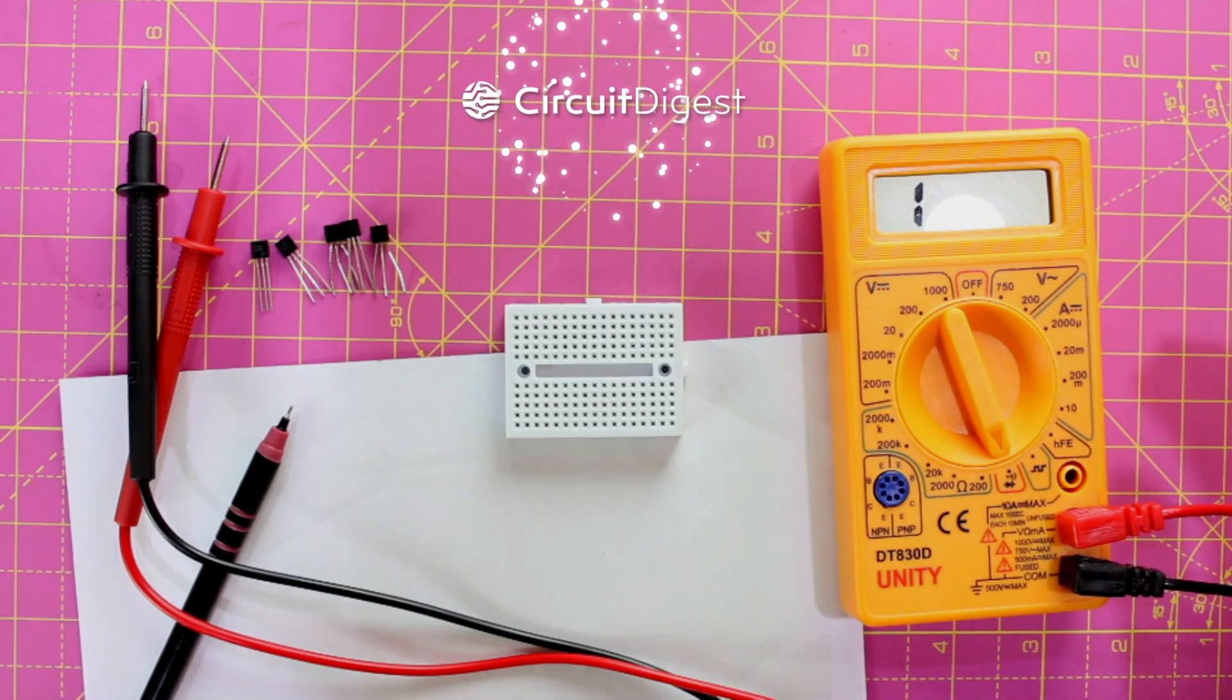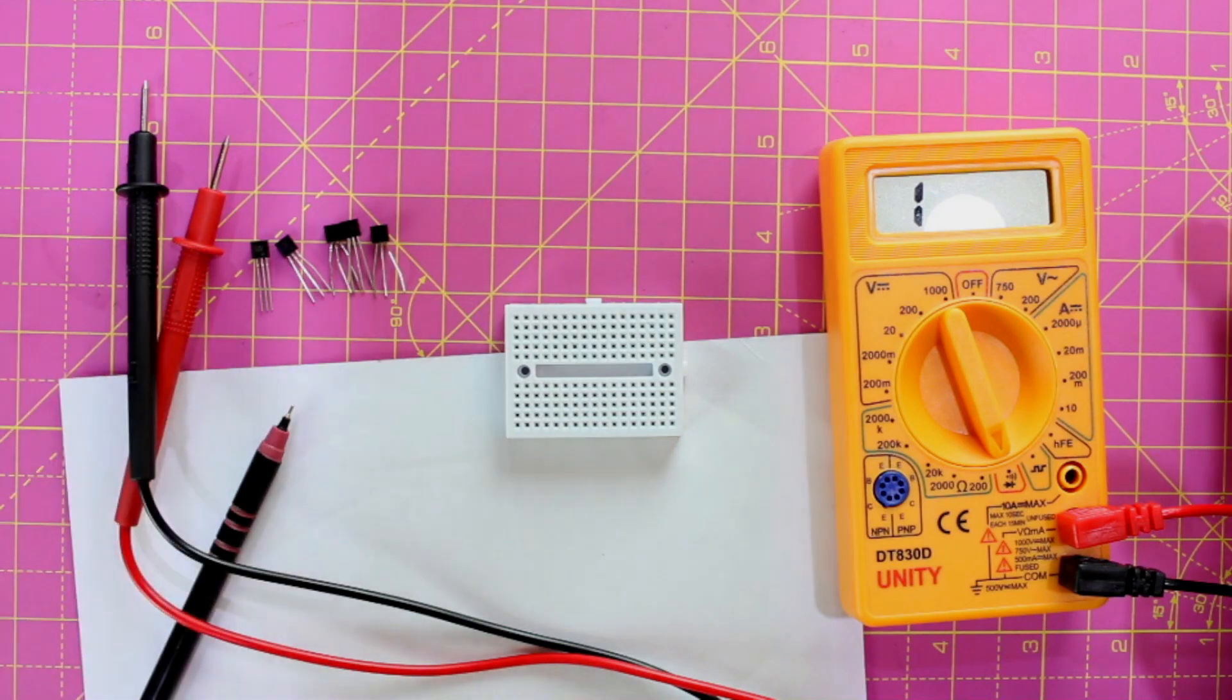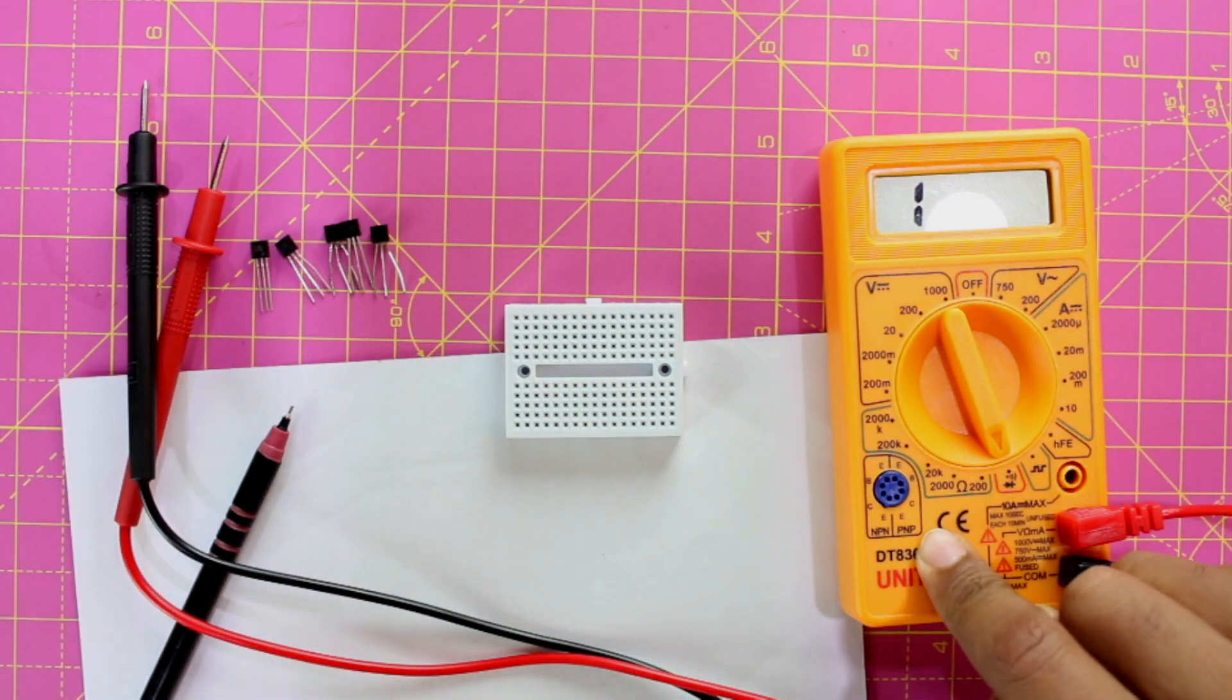Hi, this is Ashwant from Circuit Digest and in this video I'll show you how you can test your transistors as an NPN transistor or a PNP transistor using a simple multimeter like this one.